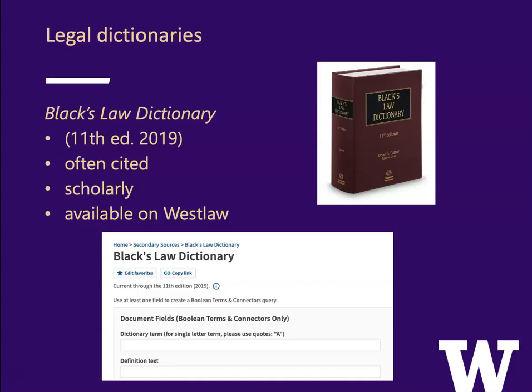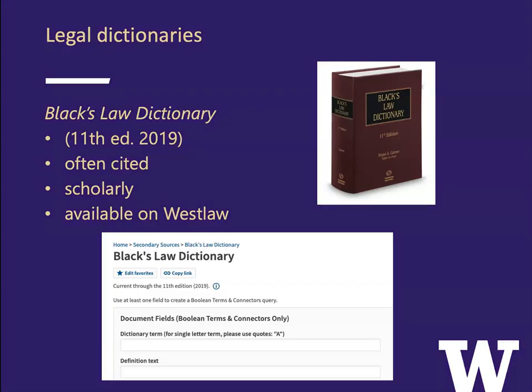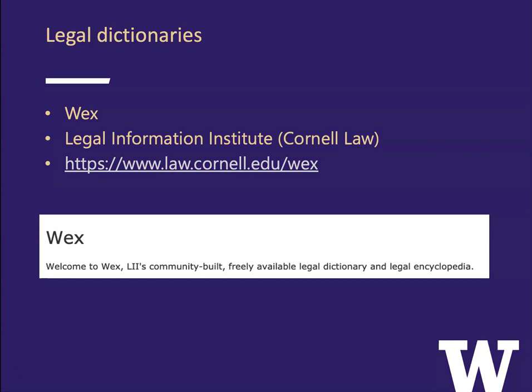From here on out, I'm going to give you a quick tour of several important types of secondary sources. First, legal dictionaries. Black's Law Dictionary is pretty current — the 11th edition came out in 2019. It is often cited by courts and by scholars. It is scholarly and available on Westlaw.